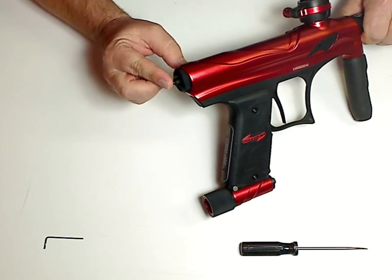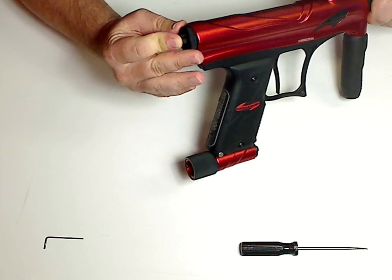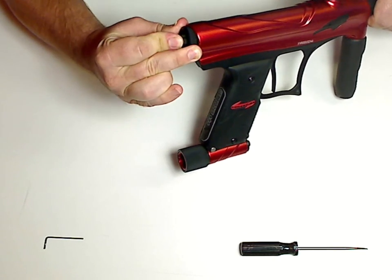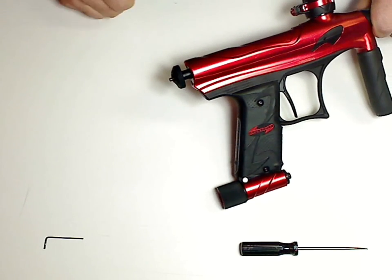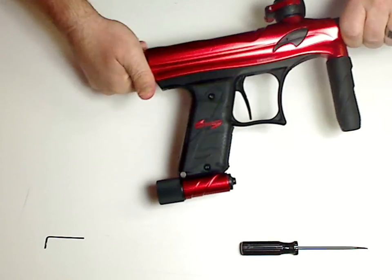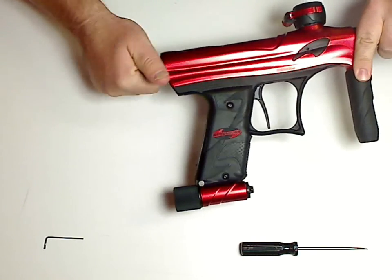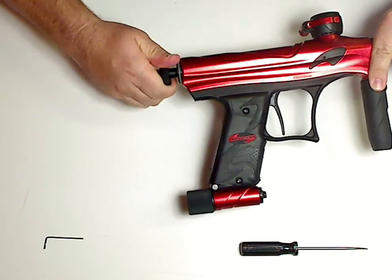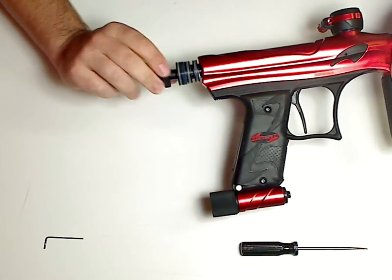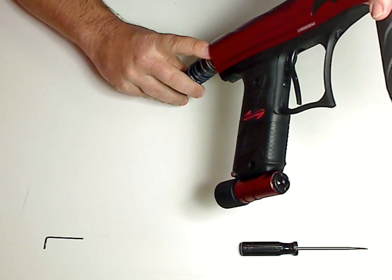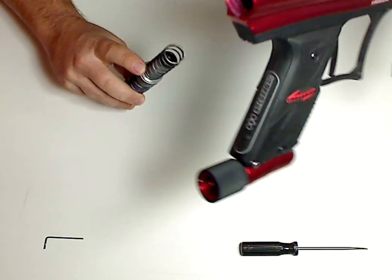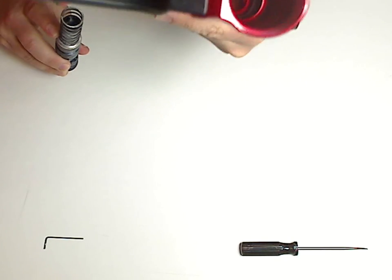So the first thing is you press this little button in and hold on to the back cap and you can pull that out. And what that does is that gives you an easy way to grab and unscrew the spool valve. Pops right out. Spring and all, and that gives you full access through the whole gun.